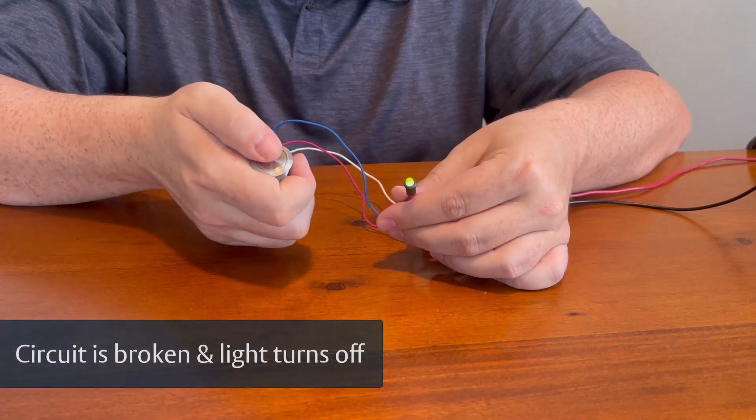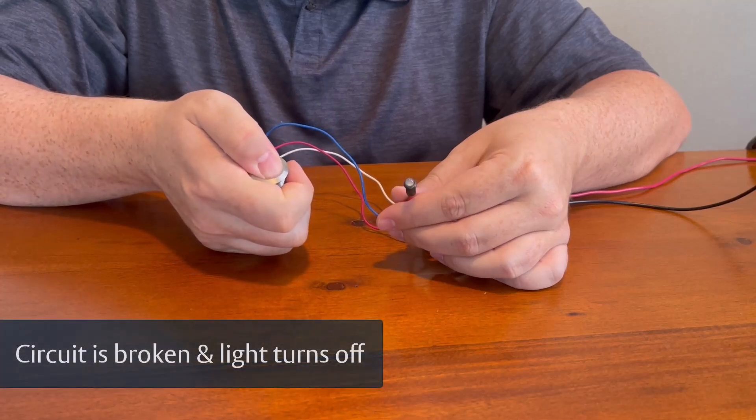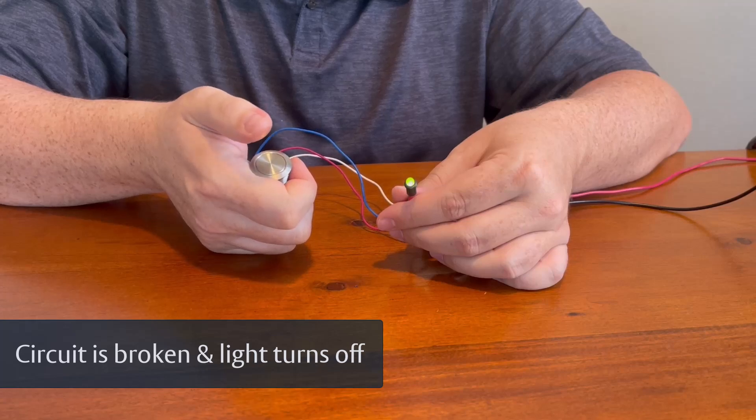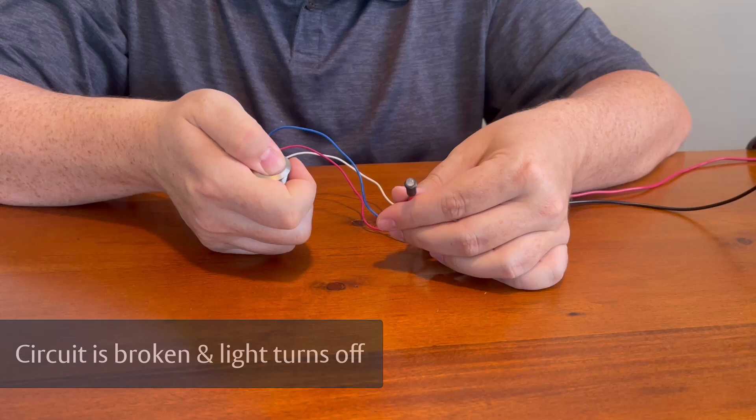When you activate the switch, it opens or breaks the circuit, stopping the current flow. Imagine an emergency stop button, pressing it breaks the circuit, and shuts off the connected equipment.